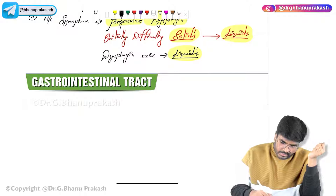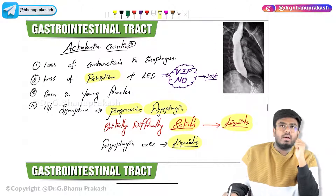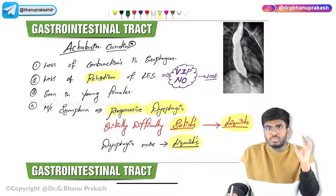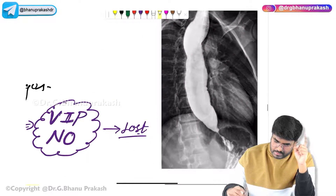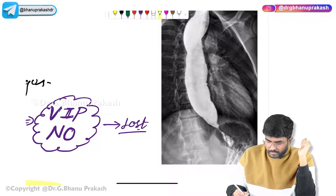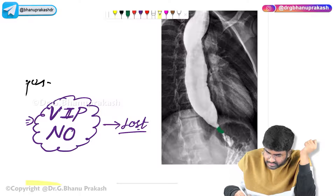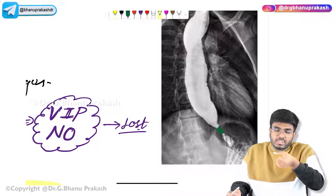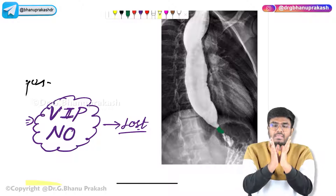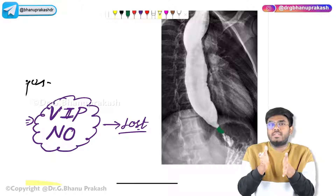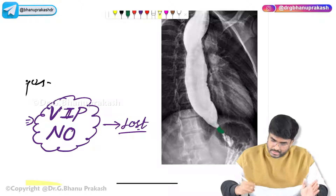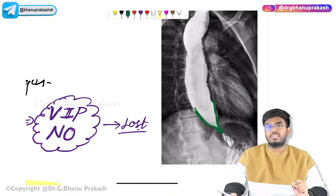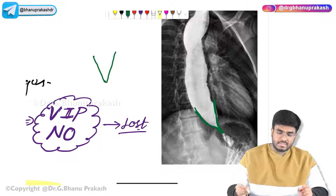On barium swallow: if you ask this patient to take barium swallow, you can appreciate that the lower esophageal sphincter is tightly contracted, so the barium material is not going down into the stomach. Because of this, the esophagus accumulates all the barium and gets dilated. This classically gives an appearance called the bird beak appearance — the esophagus is dilated, and the lower esophageal sphincter is tightly contracted, giving a beak-like narrowing.